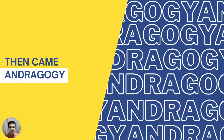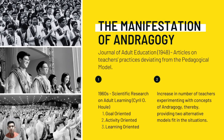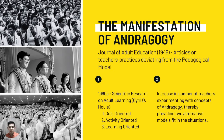The andragogical model was manifested into instruction because there was a necessity to accommodate the learning needs of adult learners. This first appeared in the Journal of Adult Education in 1948. There were published articles on teachers' practices deviating from the pedagogical model, and a sense of guilt from those teachers because their approaches were not based on theory. They were trying to look for necessary changes to accommodate adult learners' needs. We can also make use of the pedagogical model for adult learners, but only for specific situations.